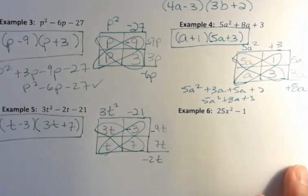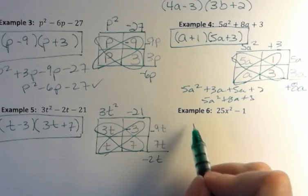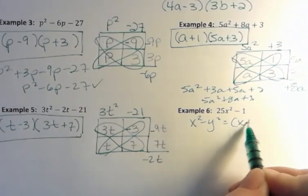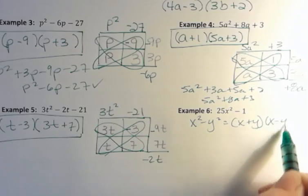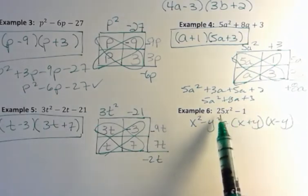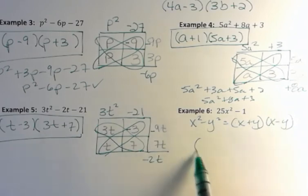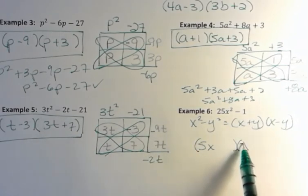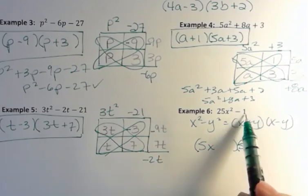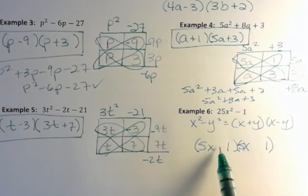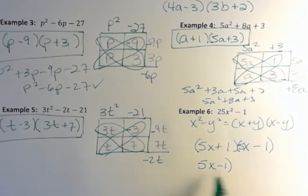And the last one is the difference of squares. The difference of squares formula is x plus y and x minus y when you have a difference of squares. Instead of x, we have 25x, so that's going to be 5x and 5x. And then we have 1, that's going to be 1 and 1. And the rule is you have 1 plus and 1 minus. It doesn't matter which one you write first.